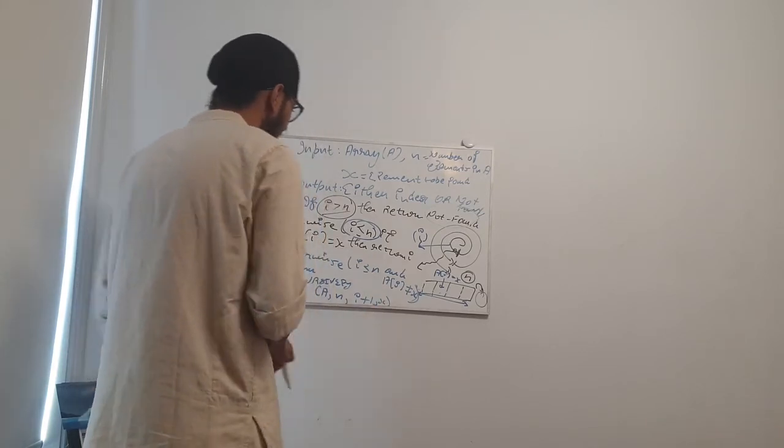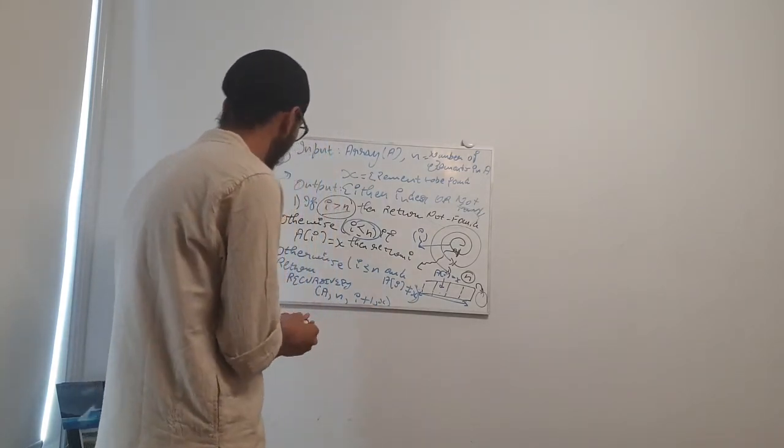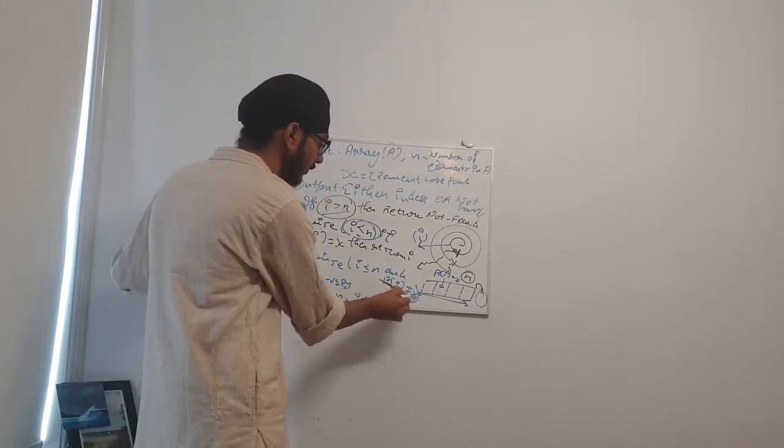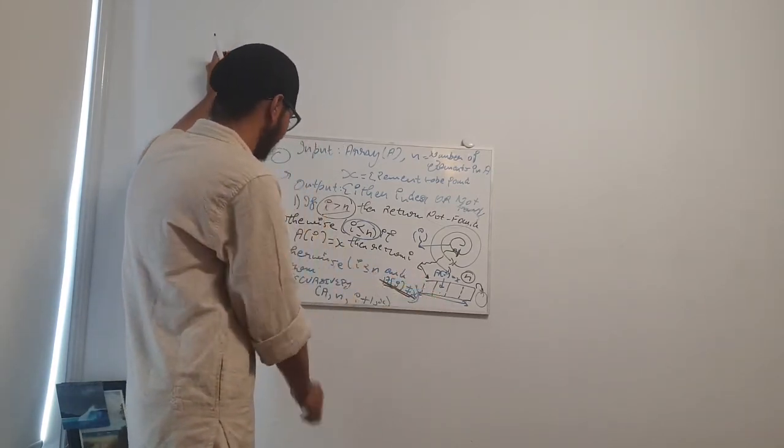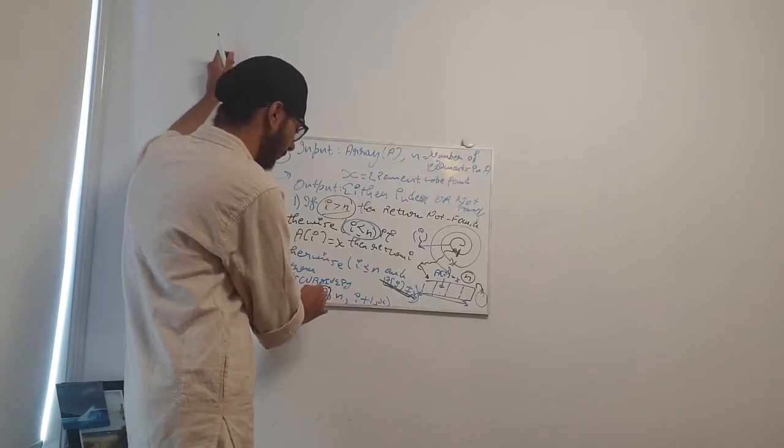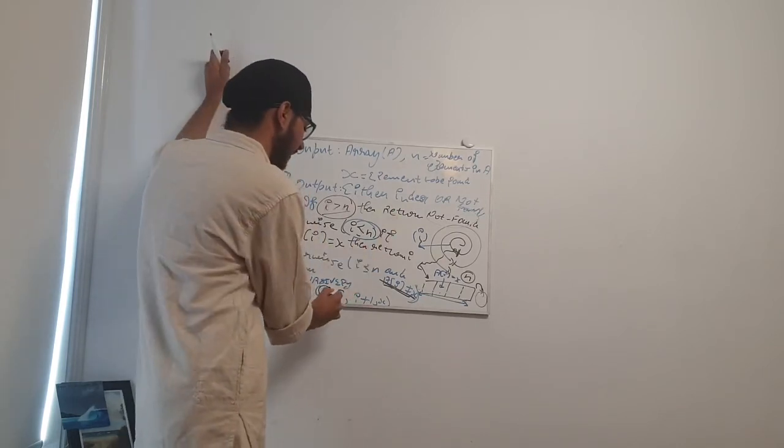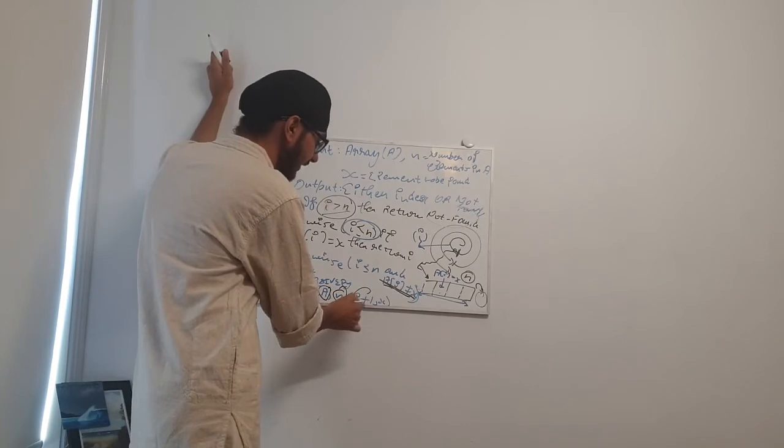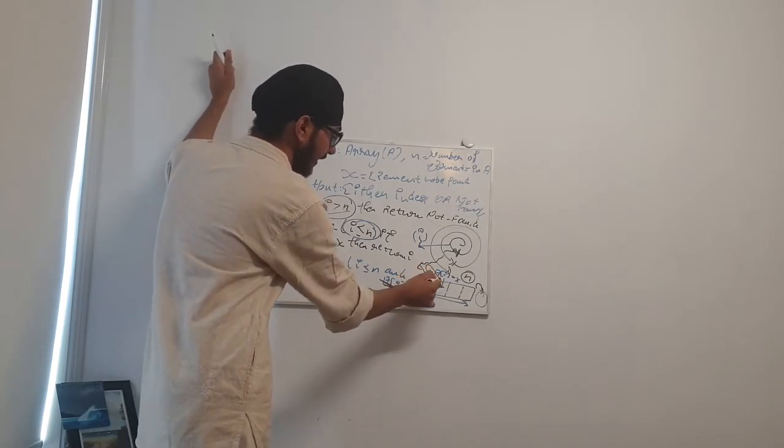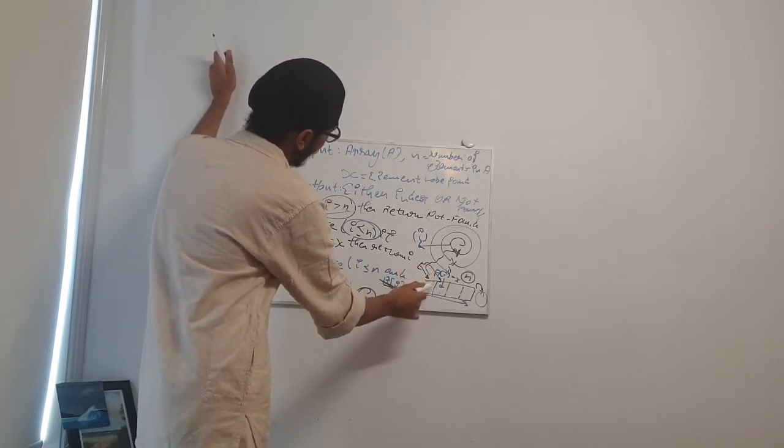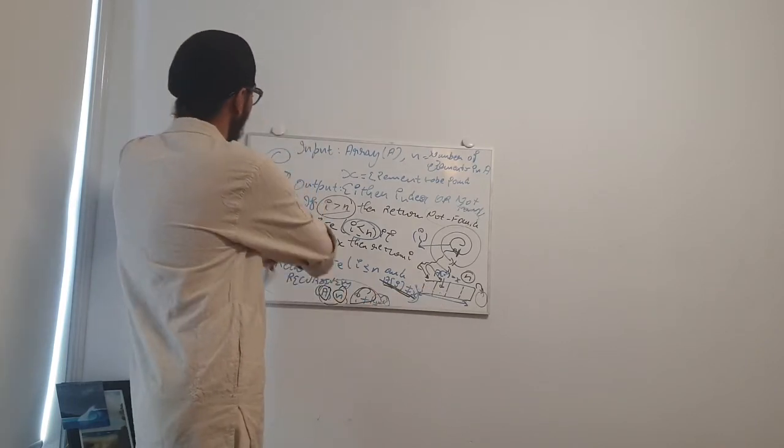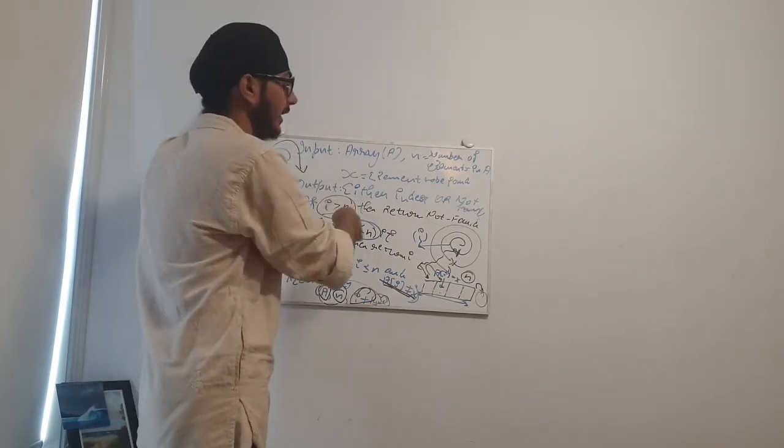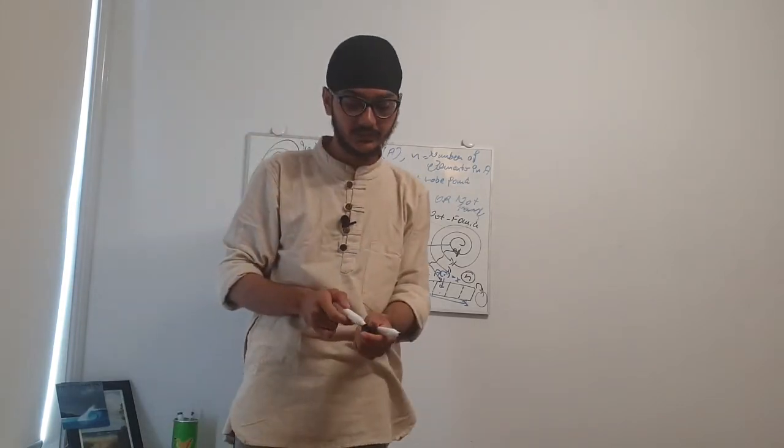What does this mean? If A of zero is not equal to X, then what we will do is input the same array, same number of elements, but with the next element. We will say that I equal to zero is done. Now increase I by one and do the same thing from over here again.